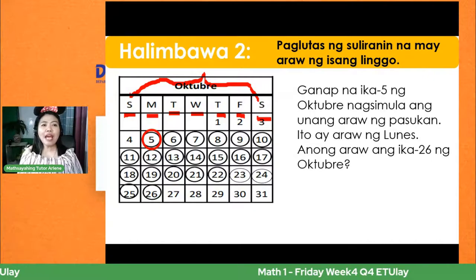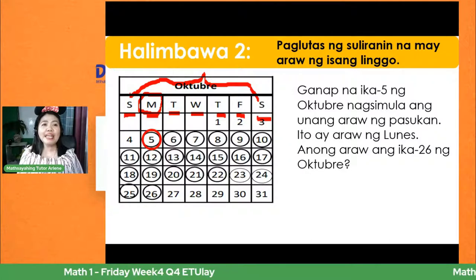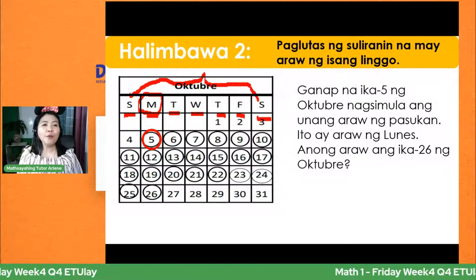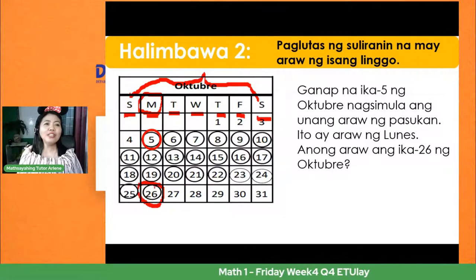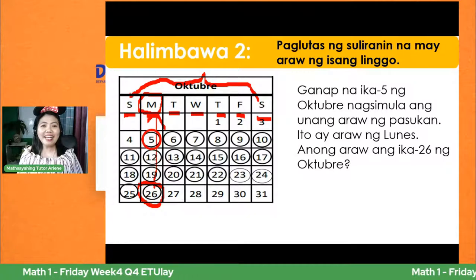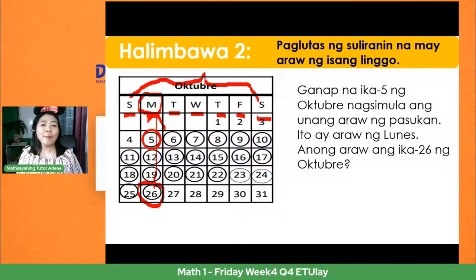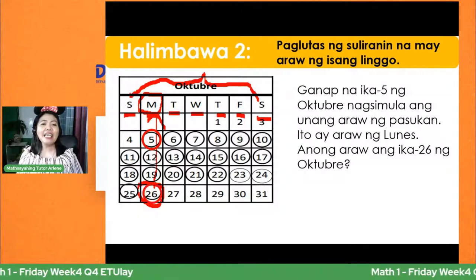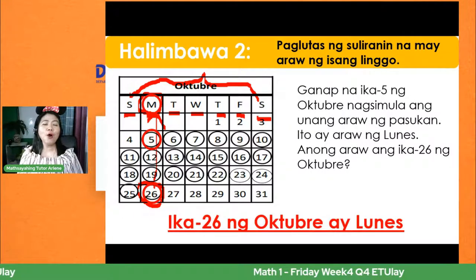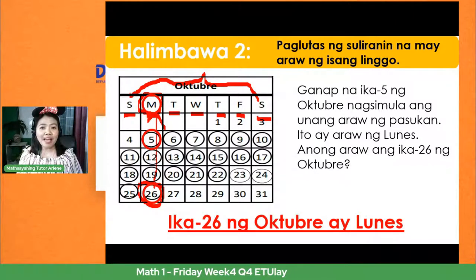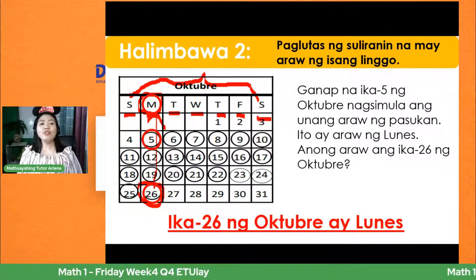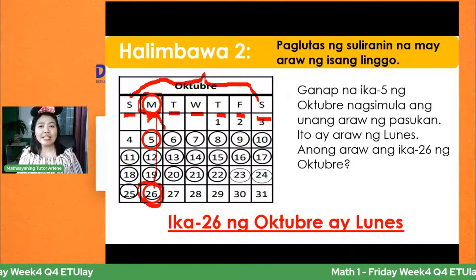Gamit ang kalendaryo, sa pamamagitan ng pagbilog ng araw, nakita natin na ang ika-26 ng Oktubre ay Lunes din. Ang Oktubre 5 at ang Oktubre 26 parehong nakatapat sa Lunes. Marunong na tayong gumamit ng kalendaryo.